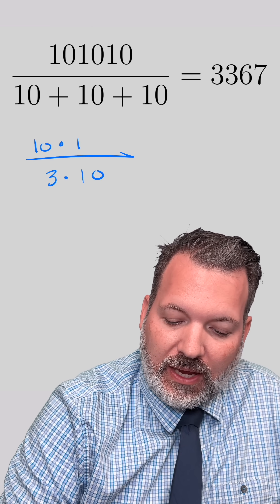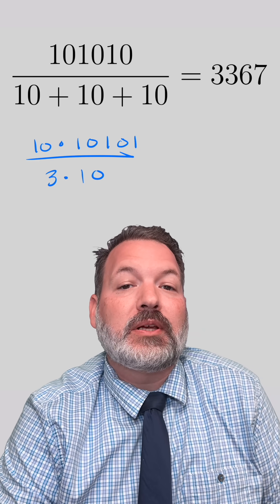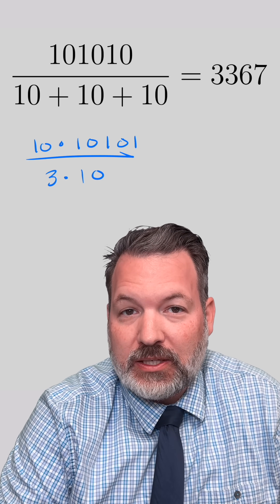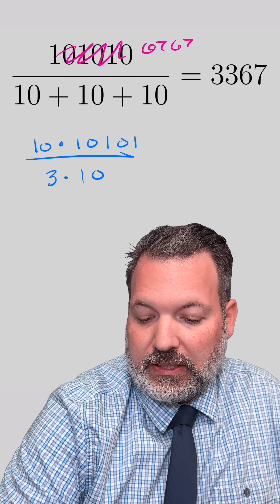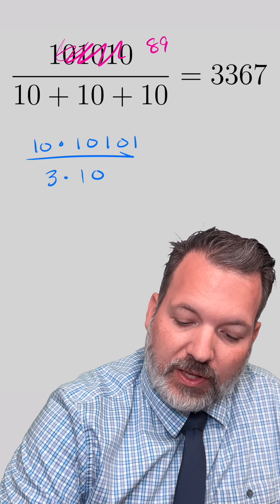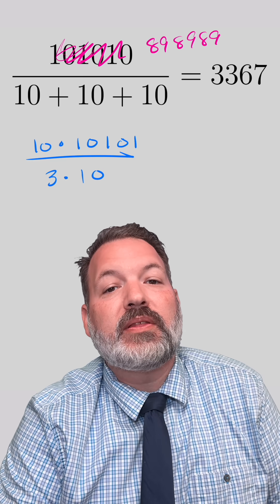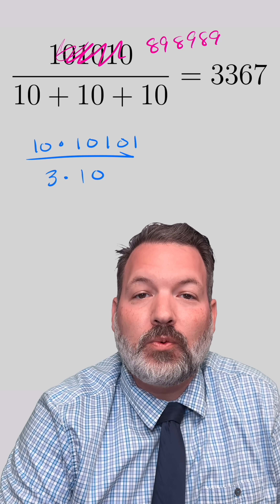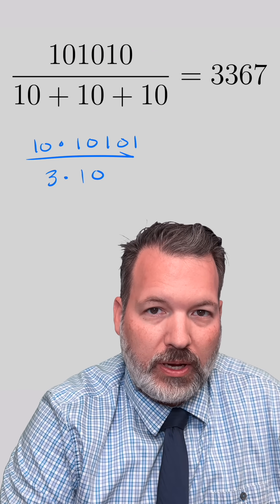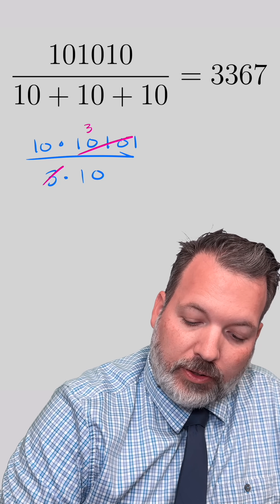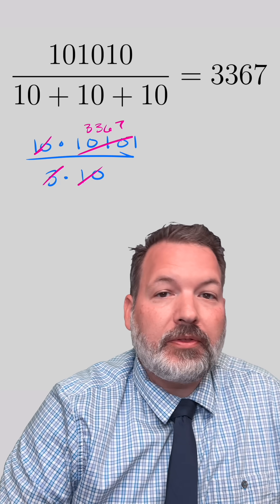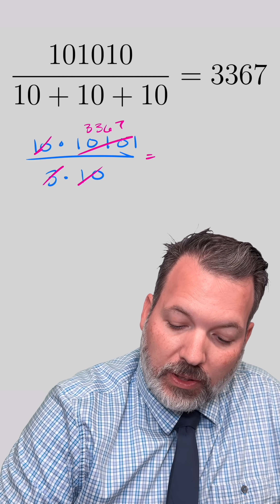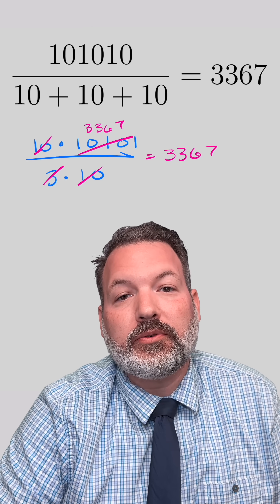Instead, 10, 10, 10 happens to be the same thing as 10 times 10,101. And in fact, if we did this with any two-digit number, that's exactly what we would be multiplying. So for example, if this were 89, 89, 89, that would be the same thing as 89 times 10,101. Now, 10,101 is still divisible by 3. If we divide 3 into 10,101, we get 3,367. Our 10s cancel out the same way the digits did before, and that is what leaves us with the answer of 3,367.